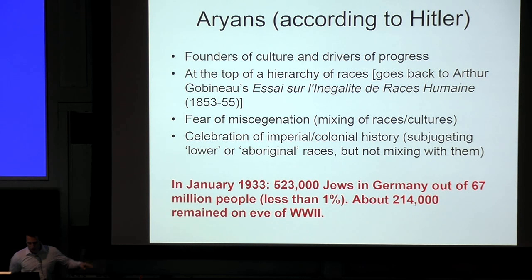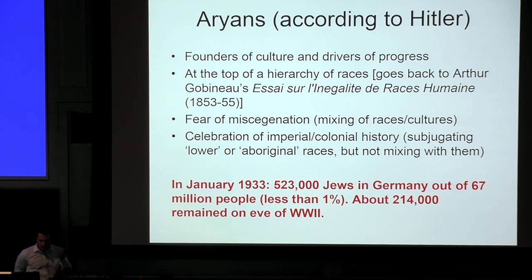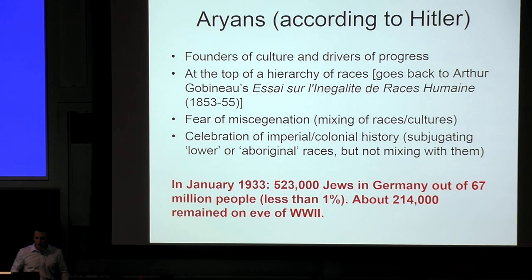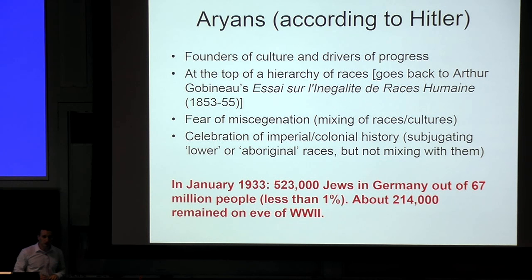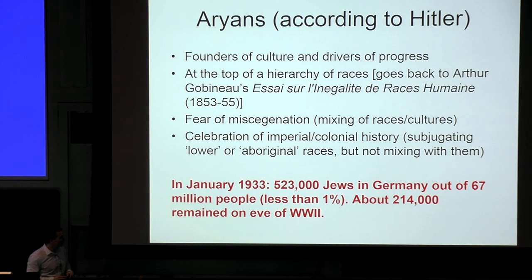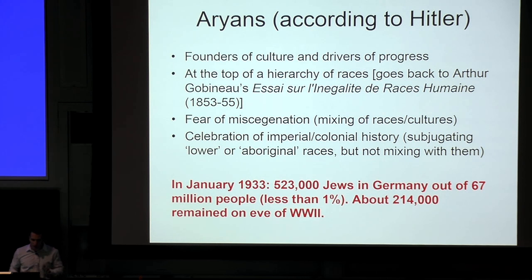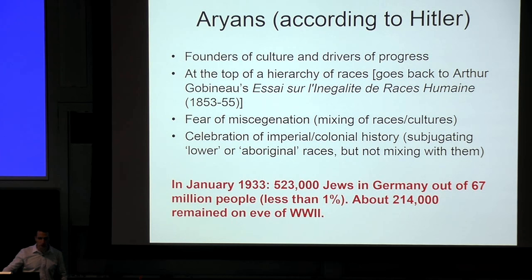Some numbers about Jews in Germany: when Hitler is appointed chancellor in January 1933, there are about 523,000 Jews in Germany out of 61 million people. On the eve of World War II, about half of them managed to leave. We'll talk about why they chose to leave and whether they could.